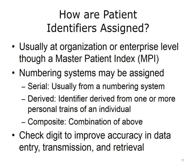How are patient identifiers assigned in healthcare? In the U.S., patient identifiers are typically assigned at the organizational or enterprise level through a Master Patient Index, or MPI. These usually use some sort of identifier scheme that may consist of numbers and letters, assigned serially or derived from one or more personal traits of an individual, or a composite combination of both. There is also usually a check digit used to improve accuracy in data entry, transmission, and retrieval.